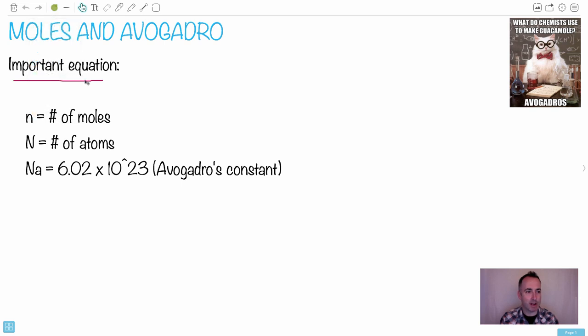The equation we're going to need for this is in your data booklet. It goes n equals capital N over N subscript a. This is the equation you need. Luckily you don't have to memorize it, it's there for you in your data booklet.